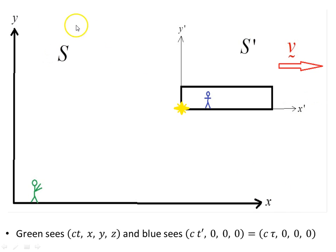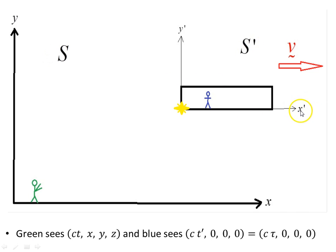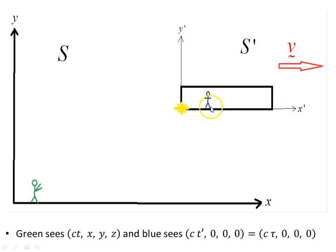Let's look at a frame of reference S. The green observer sees a spaceship passing by. The green observer is at rest with respect to his or her own reference frame and sees the spaceship passing by at speed v. In frame S prime, the spaceship forms its own reference frame with coordinates X prime, Y prime, Z prime, and T prime. The origin of S prime is taken at the bottom left corner of the spaceship. The green observer sees the flashing light and ascribes to it coordinates CT, X, Y, and Z, which can change as the spaceship moves through space.